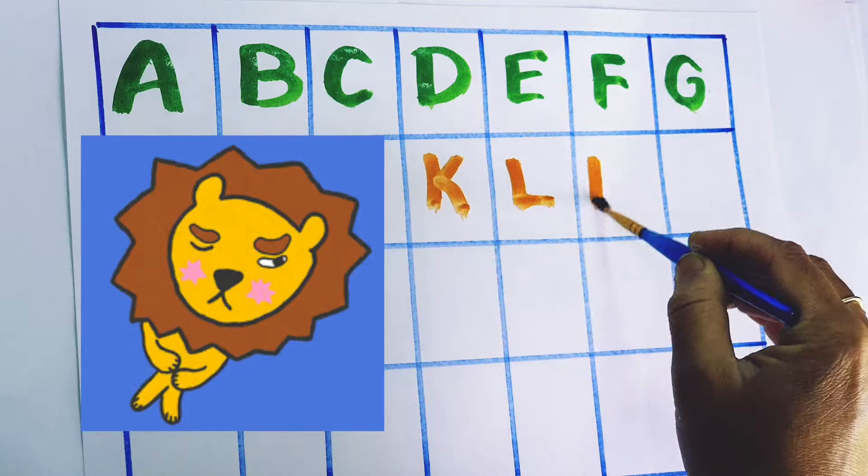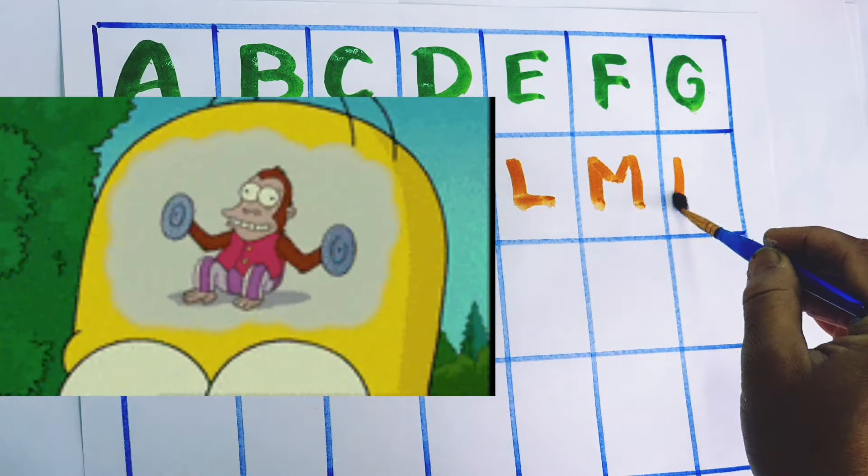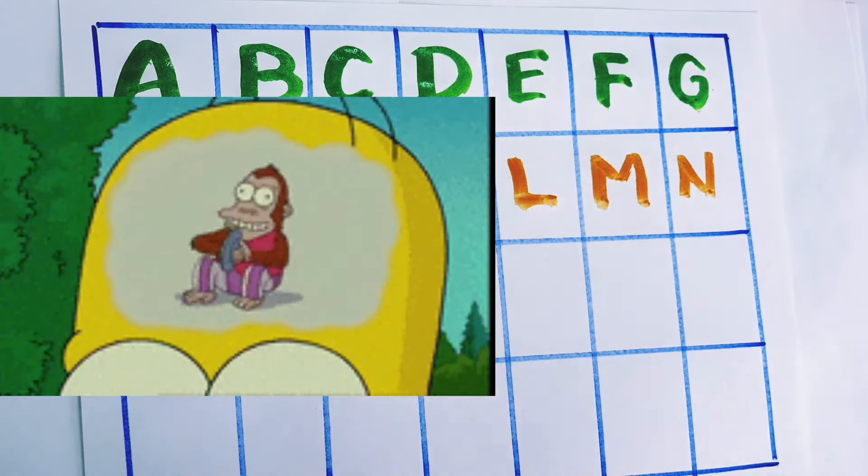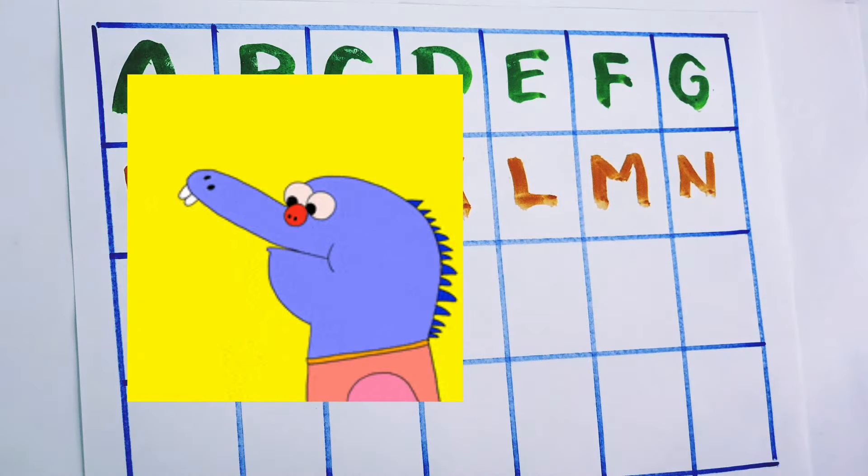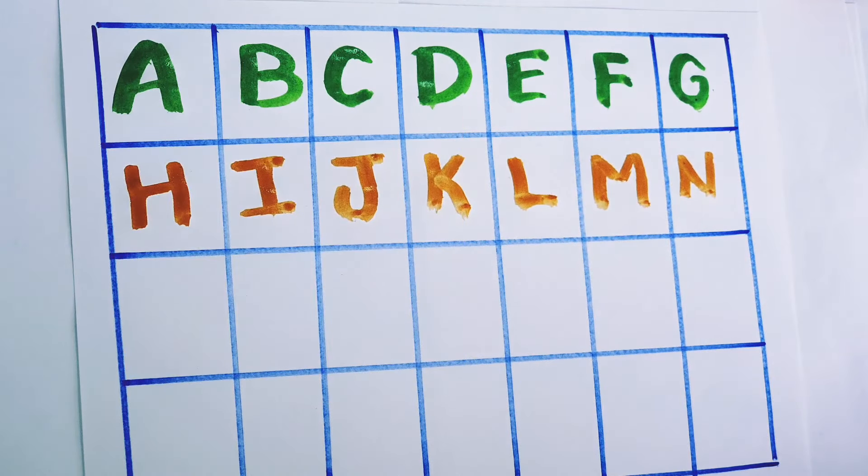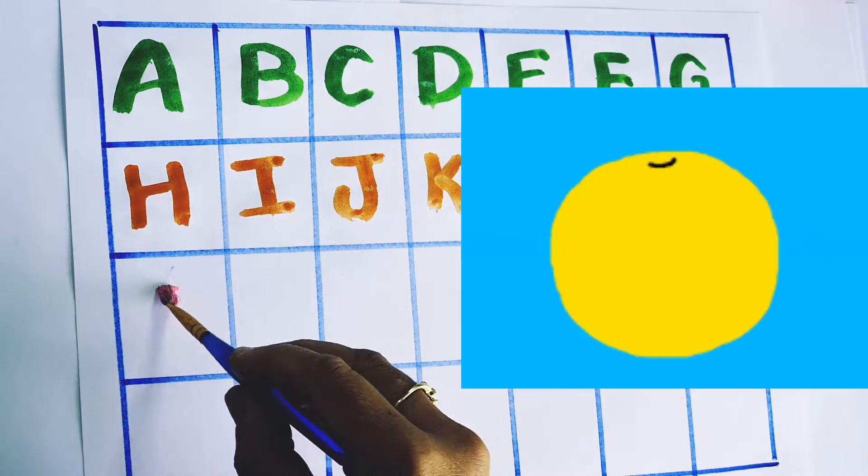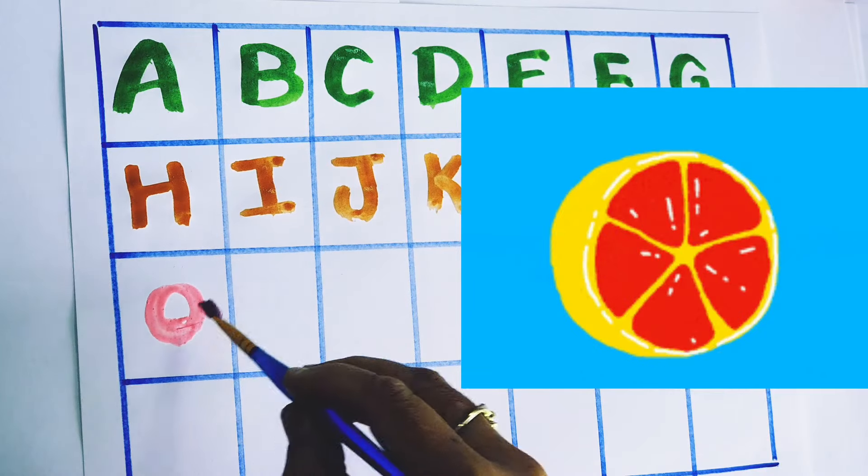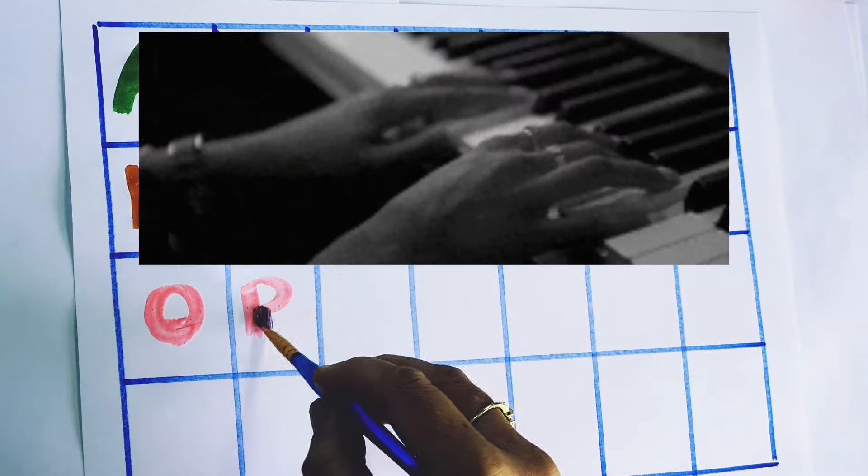M for monkey, N for nose. Pink color: O for orange, P for piano.